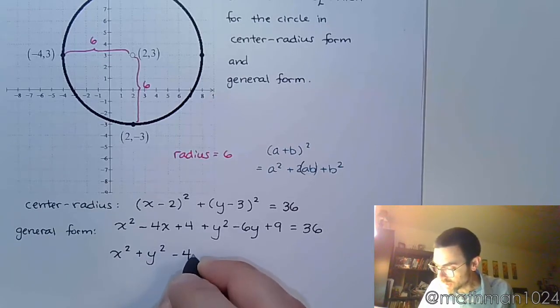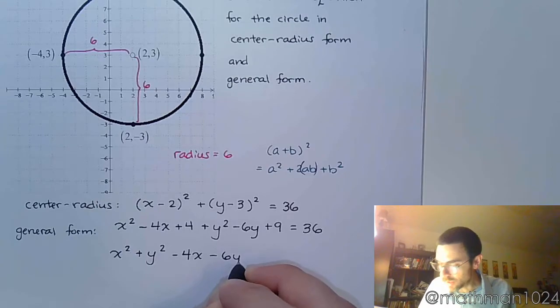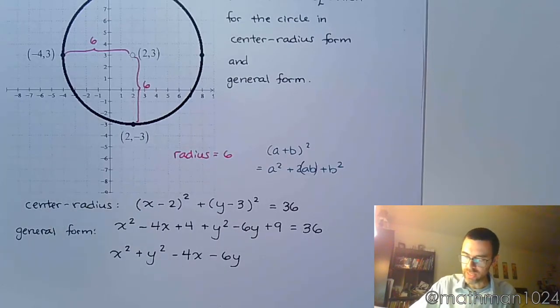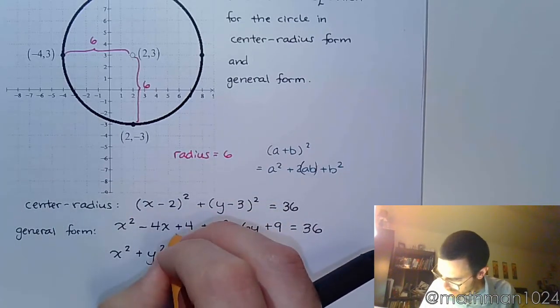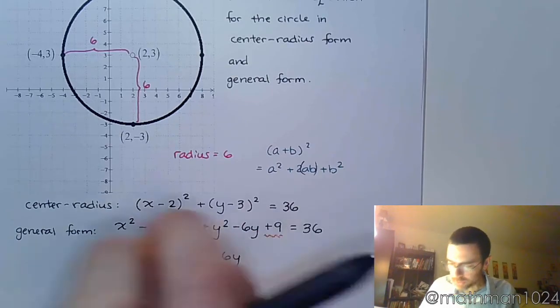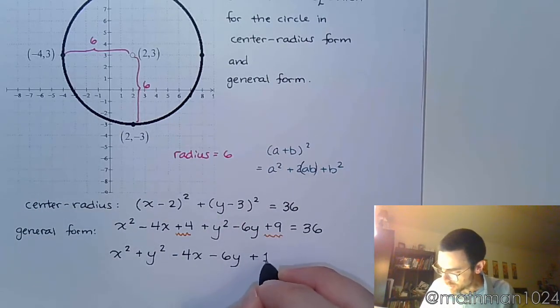So reordering the terms is going to be x² plus y². And I do my x term, so I do minus 4x, and then the y term, minus 6y. And I'm going to take the plus 4 and the plus 9 and combine those, so that's plus 13.